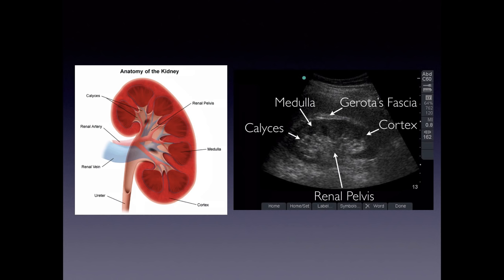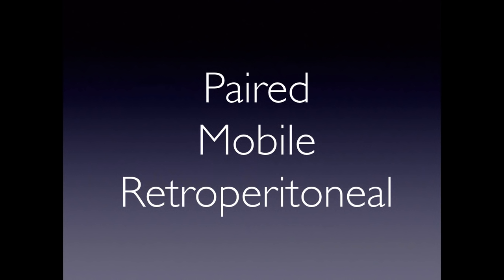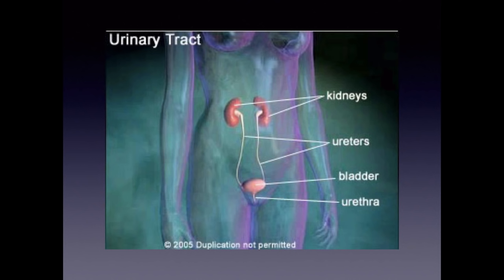The kidneys are paired, mobile, and retroperitoneal organs. To emphasize the anatomy: the kidneys, ureters, and bladder form a closed system.